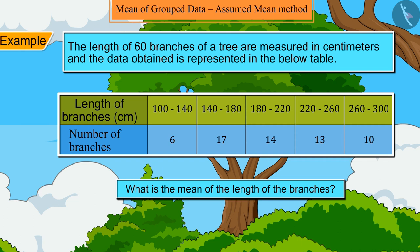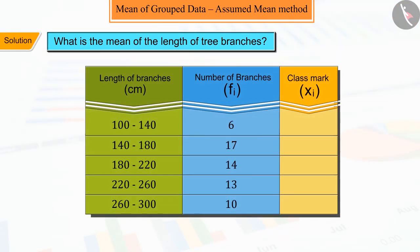Let's see. From the given table, we can say that for each class interval, we will first find the class mark, that is the midpoint xi.